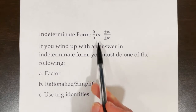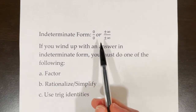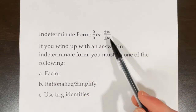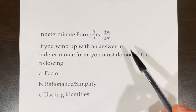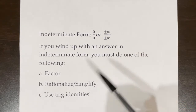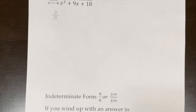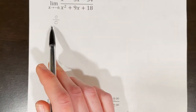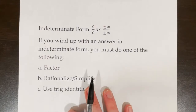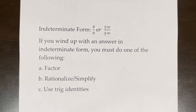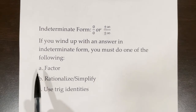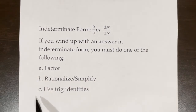Indeterminate form is 0 over 0, or it can look like plus or minus infinity over plus or minus infinity. If you get indeterminate form, the answer is not 0 over 0, and it's typically not 'does not exist.' You need to do further analysis: factor and cancel common factors, rationalize or simplify, or use trigonometric identities.